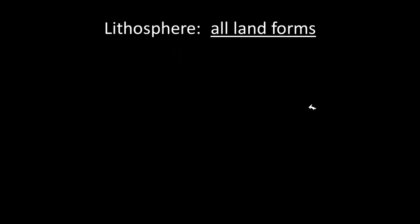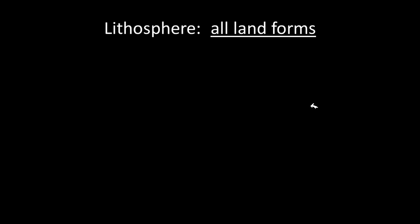That brings us to the Lithosphere. And the Lithosphere consists of all the different land forms that make up the Earth. And what we want to think about is land. You and I as people who live on land, we tend to think in our mind that land is the majority of the Earth. Well, that is not true. Land only makes up about 30% of the Earth. So, about 30% of the Earth's surface is actually land.